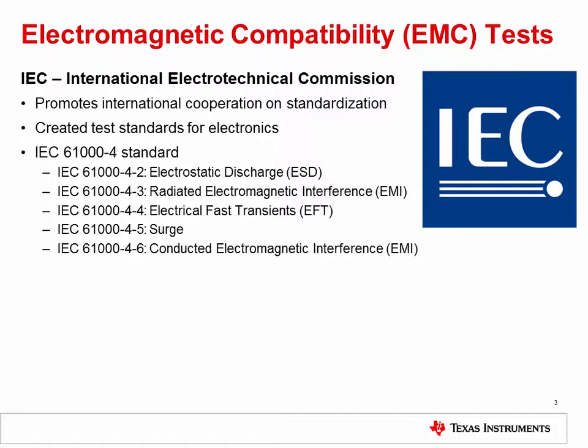The IEC is a worldwide organization which promotes international cooperation on issues of standardization in electrical and electronic systems. They have developed a set of transient and EMI immunity standards which have become the minimum requirements for manufacturers wanting to do business in the European community and around the world. The standards applicable to many electronic circuits are known as IEC 61000-4. How well a circuit performs against these test standards is referred to as its electromagnetic compatibility, or EMC, and the process of testing to these standards is called EMC testing.